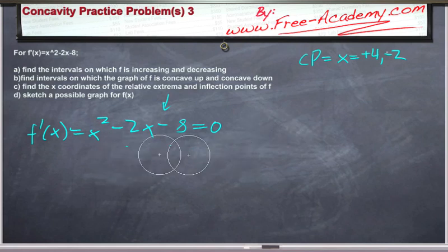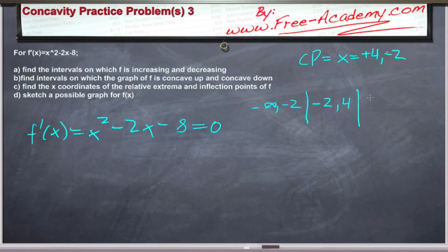Now we take that information and we set up a table to determine where this function is increasing and decreasing. So we'll go from negative infinity to negative 2, from negative 2 to positive 4, and from 4 to positive infinity. And let's pick some test values, say negative 3, 0, and 5.